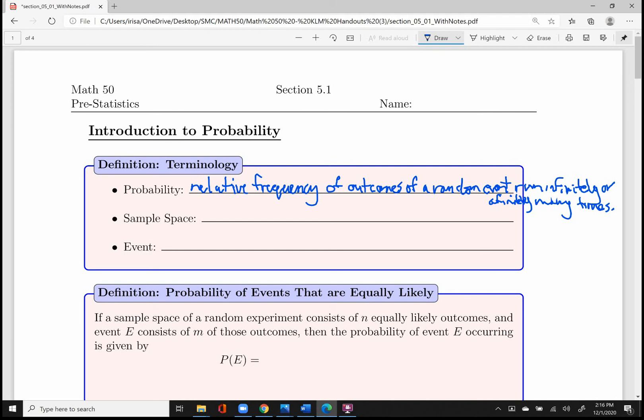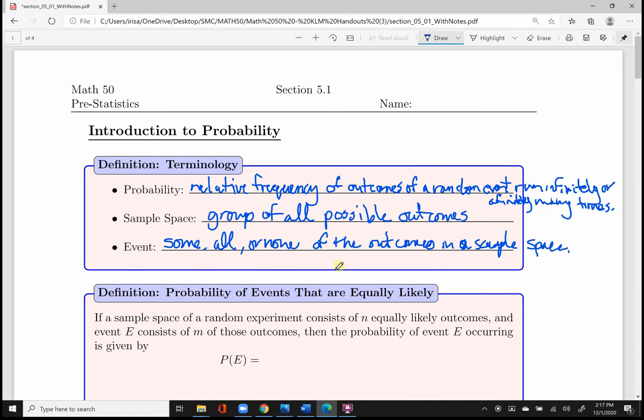Within these events, there's a sample space, which is defined as the group of all possible outcomes. And so what is an event? An event is considered some, all, or none of the outcomes in a sample space.